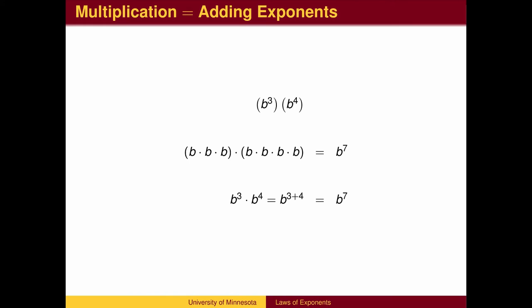b cubed times b to the fourth is the multiplication of 3 b's by 4 b's, which gives us a total of 7 b's. When we multiply two terms with exponents, we add powers.